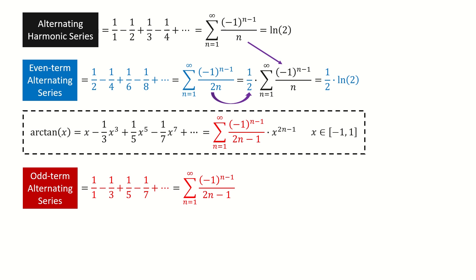Recall Maclaurin series for the arctangent function. Note for the convergent interval, it's closed at minus 1 and 1. If we compare the coefficients, we can easily see this series equals the value when x equals 1.